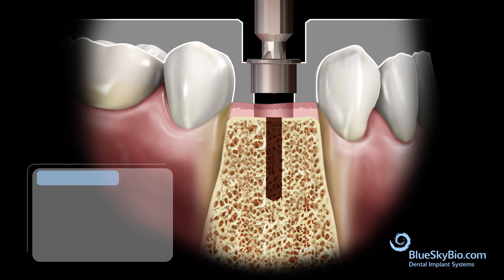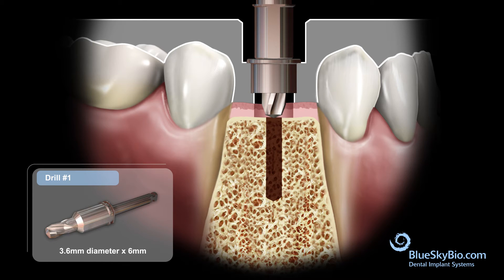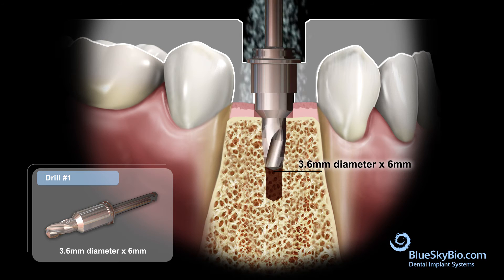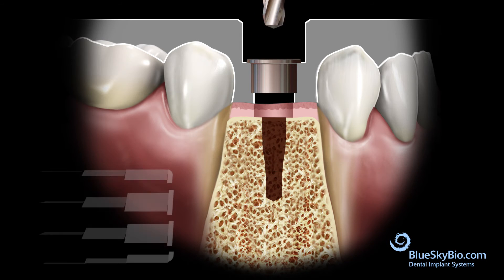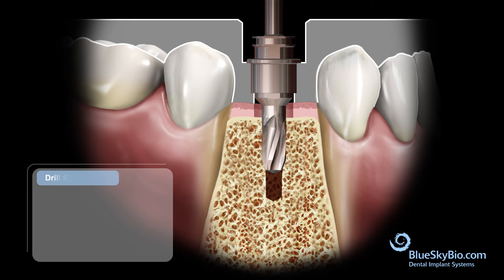In this case, use the 3.6 by 6 millimeter drill. Activate the drill within the master tube after it slightly engages the tube. Drill with irrigation until the stop portion of the master tube prevents further advancement. Then insert the 8 millimeter long drill with the same diameter without spinning until it is centered by the master tube.